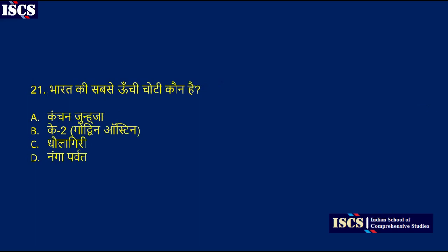Now look at question number 21: which is the highest peak in India? Options are Kanchenjunga, K2, Dhaulagiri, or Indra Parvat. The right answer is option B, K2.